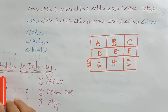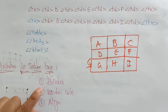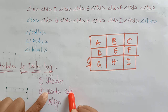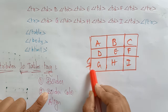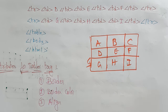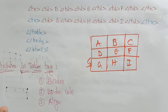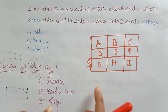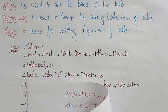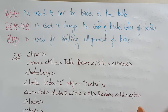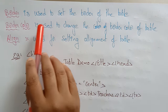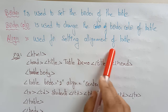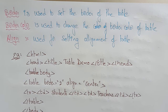Now let's see the attributes for the table tag. Attributes define what format you want. Border sets the border size — how thick or dark you want it. Border color lets you change the border color to red, blue, green, pink — whatever color you want, you can create a colorful table. Align defines where to position the table on the page — center, right corner, left corner, or wherever you want the alignment.